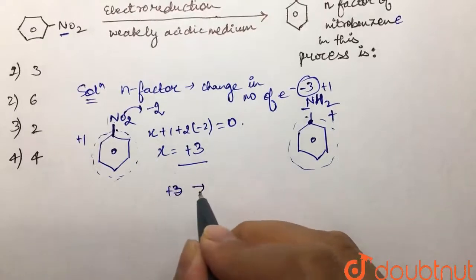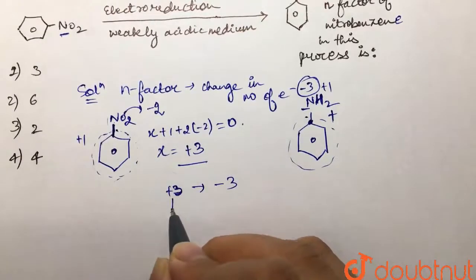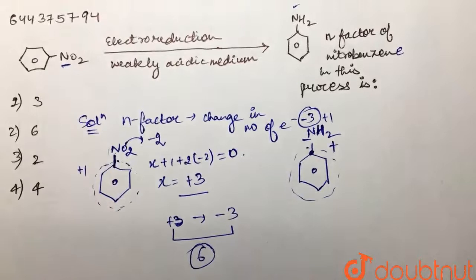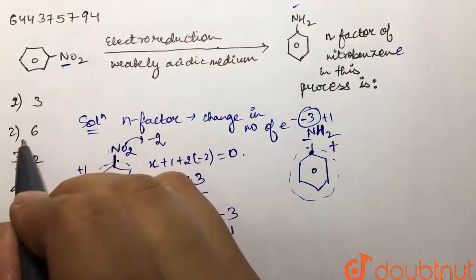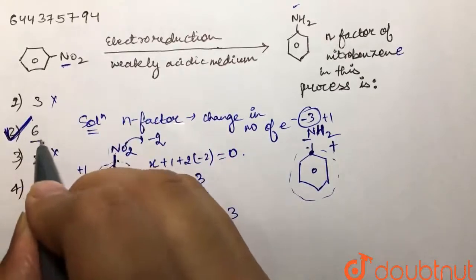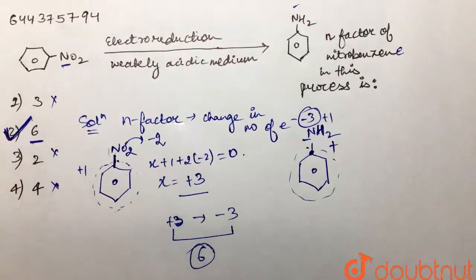So we can say that nitrogen over here is going from +3 to -3, so the change in number of electrons is 6. So our n-factor comes out to be 6. 6 is given in option number 2, hence our answer is 2.